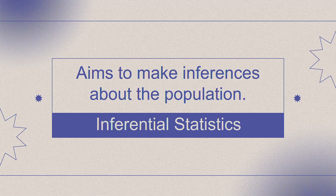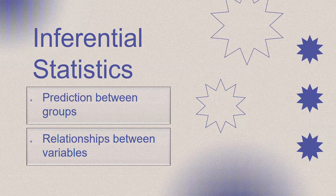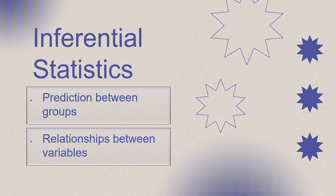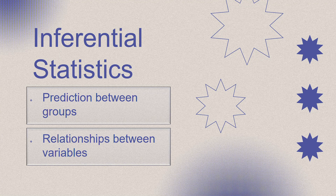Let's now talk about inferential statistics. This aims to make inferences about the population, and here are two common types of predictions. First is prediction between groups — an example is the weight differences between learners grouped according to their favorite meals. The second is relationships between variables, such as the relationship between body weight and the number of hours a week a person does zumba dance. In other words, inferential statistics allows you to connect the dots and make predictions based on what you observe in your sample data.